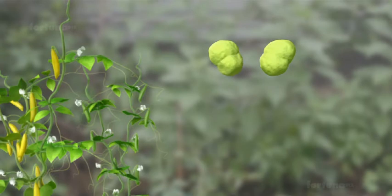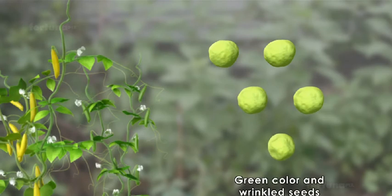Similarly, he self-pollinated pea plants with a green seed color and wrinkled coat so that all plants in subsequent generations produced green and wrinkled seeds.